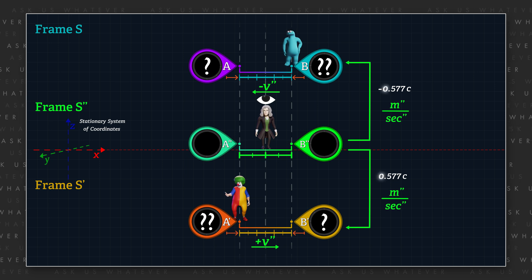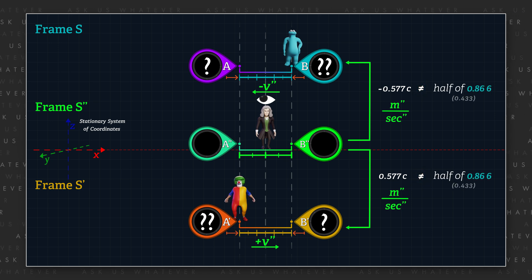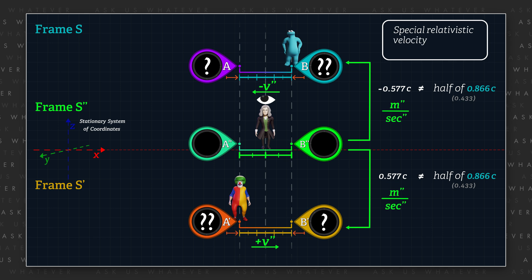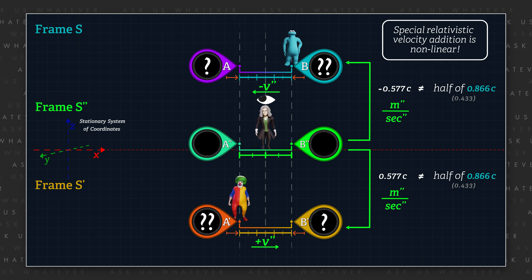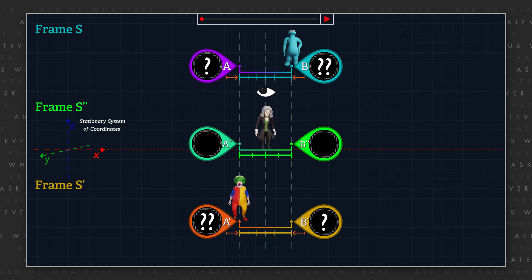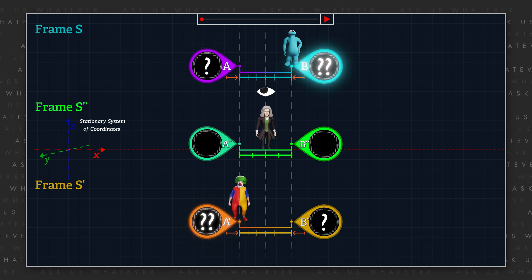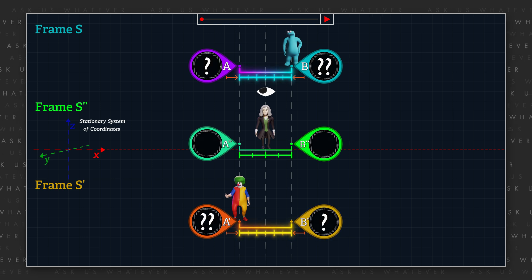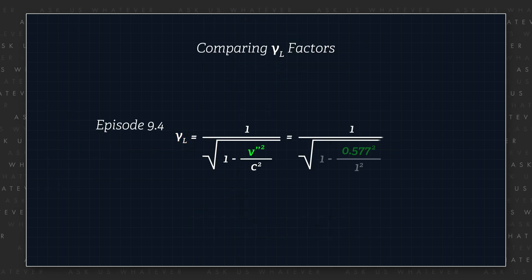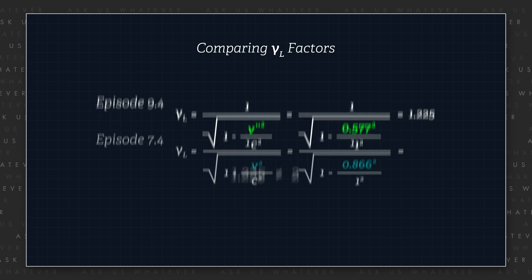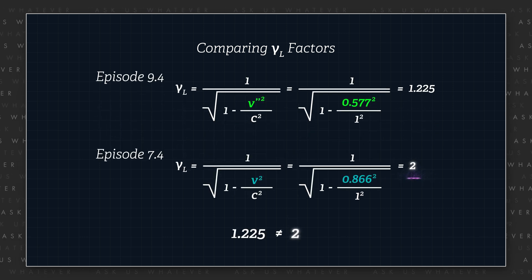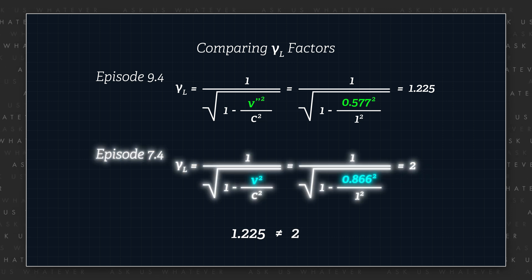We can immediately see that 0.577 times C is not numerically half of 0.866 times C. Special relativistic velocity addition is non-linear, and the difference in the two speeds is not explained by a simple time dilation gamma factor. Also, in this setup, all of the screwiness of special relativity must still be taken into account — clocks A and A prime and B and B prime must be separated by a distance now proportional to the Lorentz gamma factor computed at speed V double prime, not a Lorentz gamma factor of 2 as when comparing frames S and S prime directly in episode 7.4.